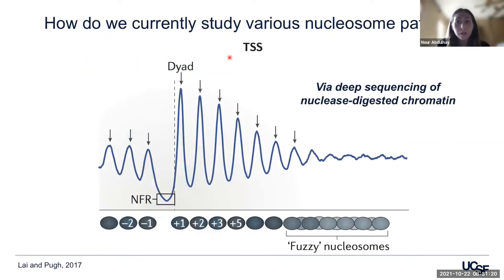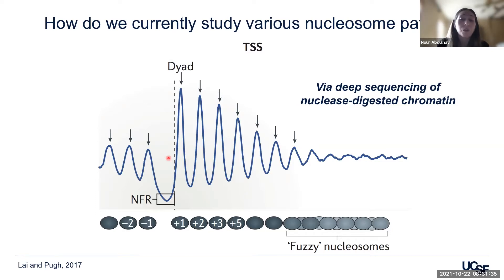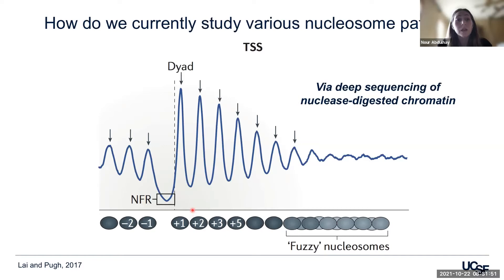So how do we study these unique nucleosome patterns? We can do this via nuclease digestion of isolated chromatin paired with high-throughput sequencing, where the nuclease cleaves accessible DNA, leaving a footprint of the nucleosomes. Through techniques like MNAseq, we have a really good understanding of how nucleosomes are positioned genome-wide. This map shows the landscape of nucleosomes of many averaged genes surrounding their transcription start sites. The NFR prior to the TSS is flanked by two well-positioned nucleosomes, termed minus one and plus one, and those surrounding nucleosomes are well-phased, while downstream you start to get fuzzy or unfazed nucleosomes.